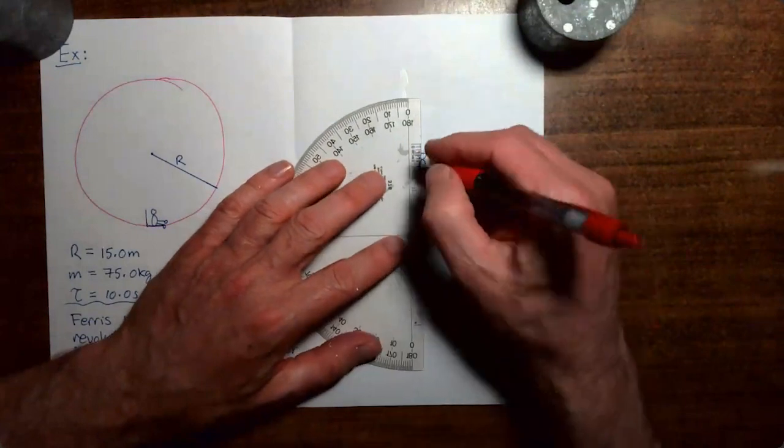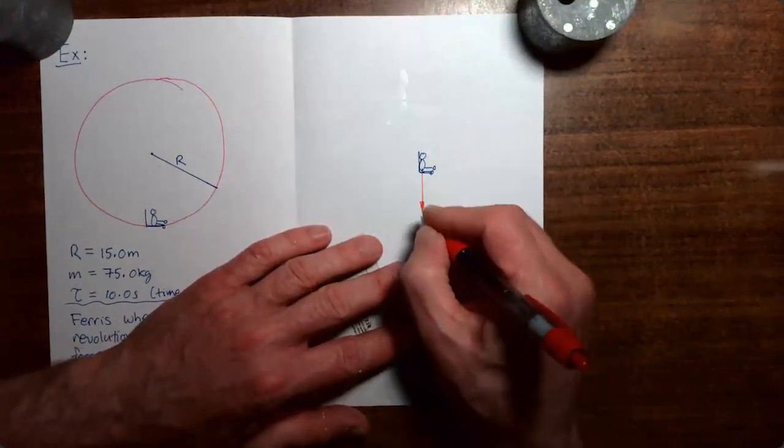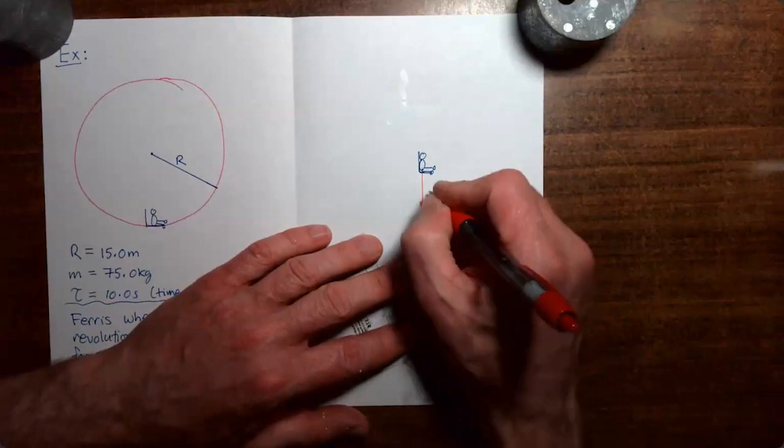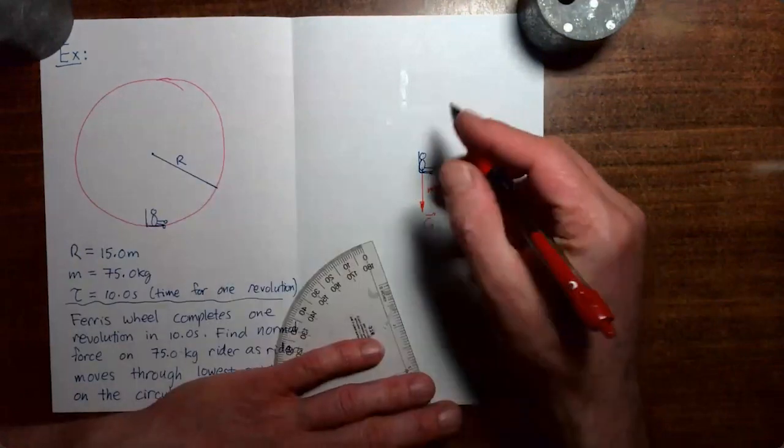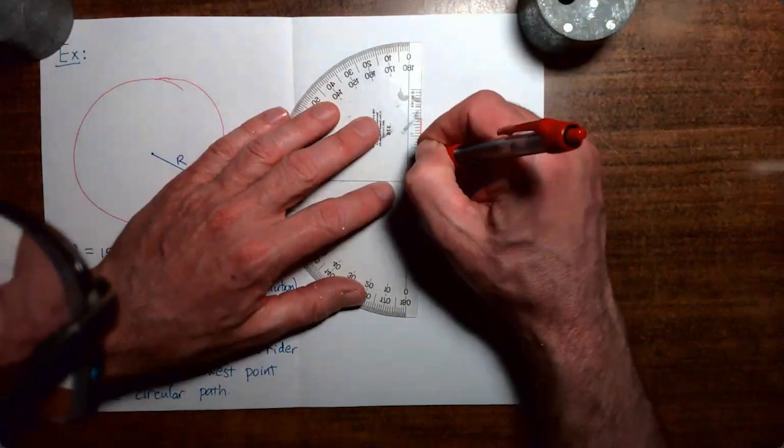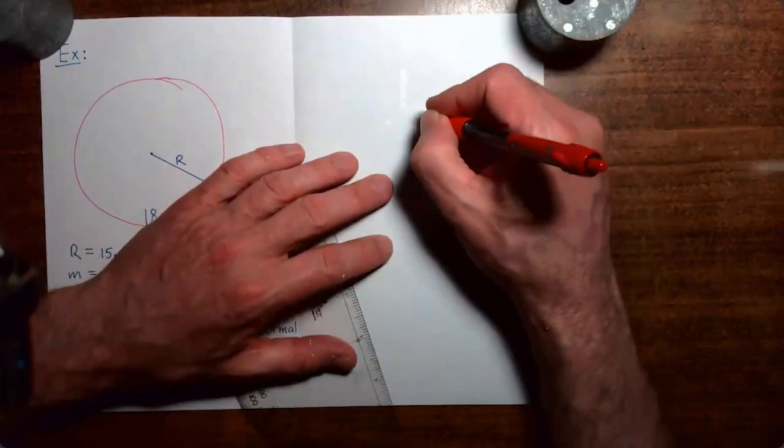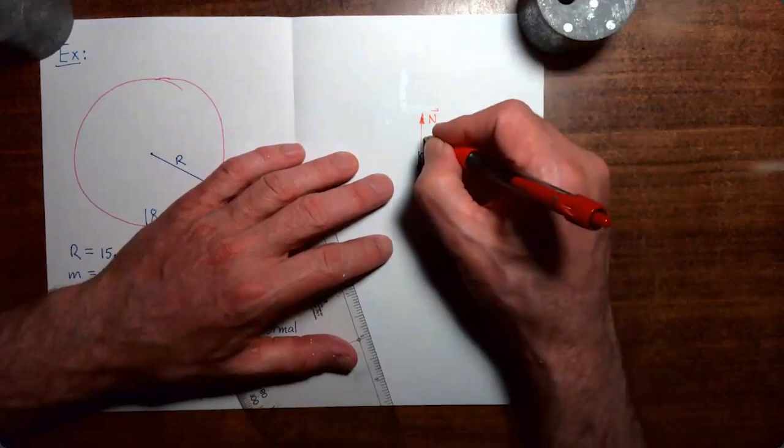So we know, first of all, that the gravitational force is acting on the rider, acting down. We also know that the seat is exerting an upward force on the rider. So we have our normal force pointing up, magnitude n.